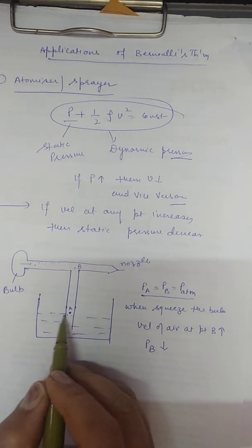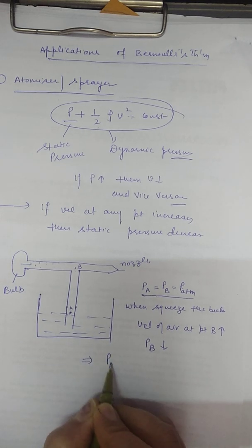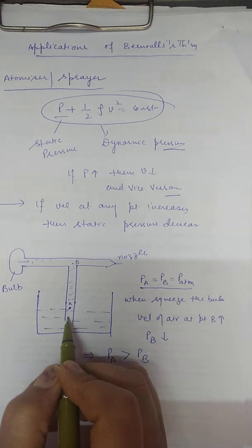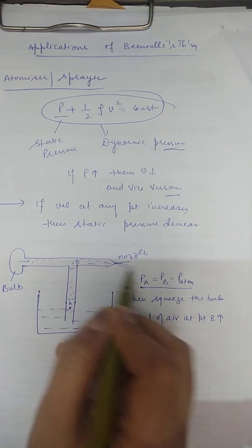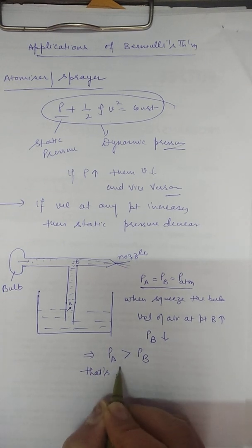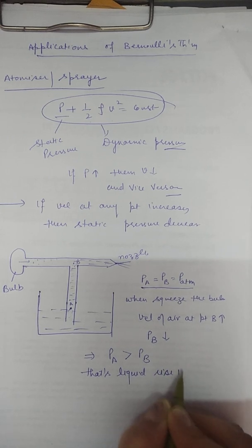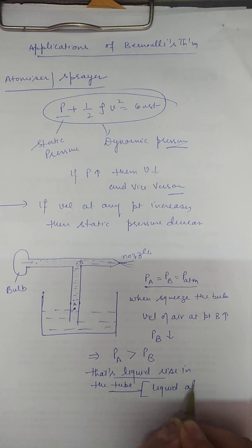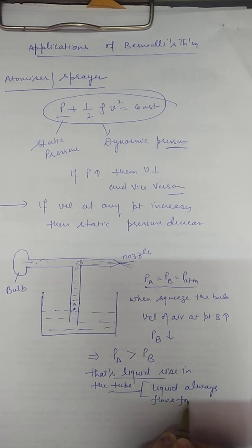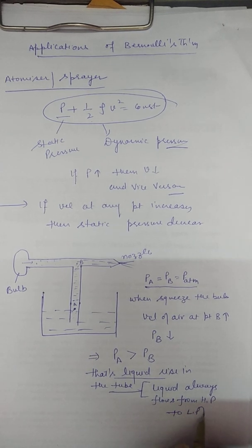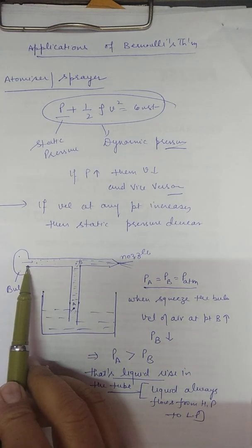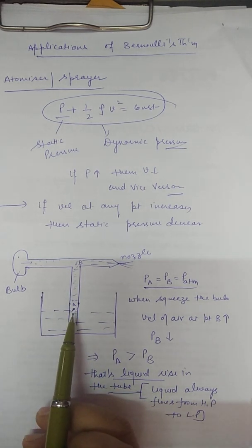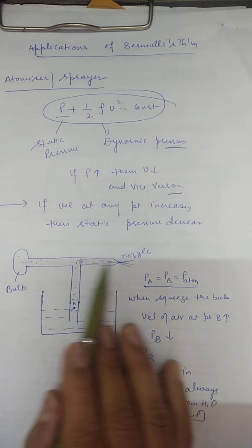At point A, the air pressure remains atmospheric. This means the pressure at point A is now greater than the pressure at point B. Since liquid always moves from higher pressure to lower pressure, the liquid rises in the tube and comes out through the nozzle.